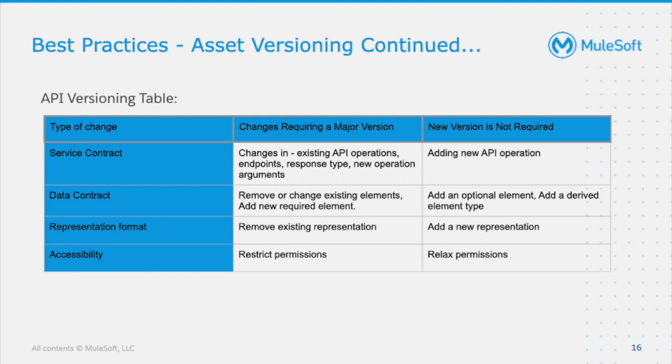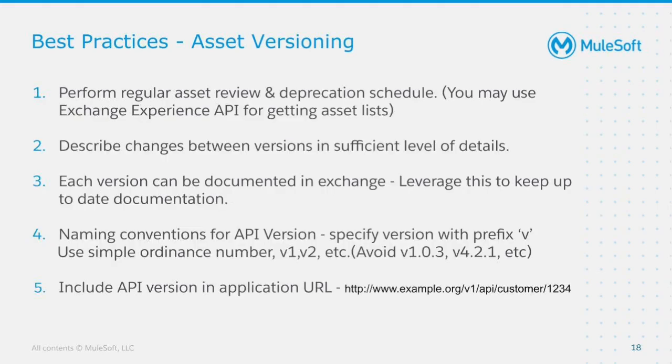To summarize when to change what: if the API structure changes in a way that requires consumers to adapt their interface, that is a major version change. If something changes within the API but the customer does not have to make any change, or it is a simple bug fix, that is a minor version change. A patch version is for backward-compatible bug fixes where no one gets impacted.